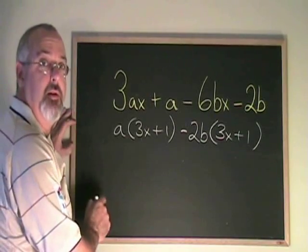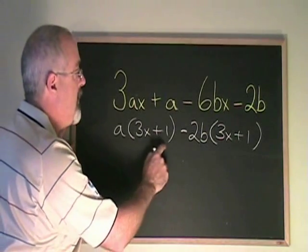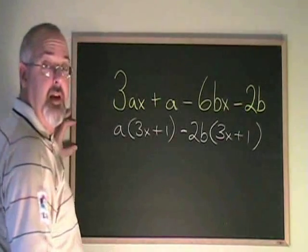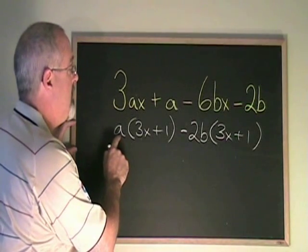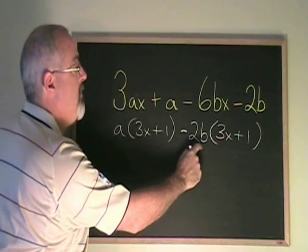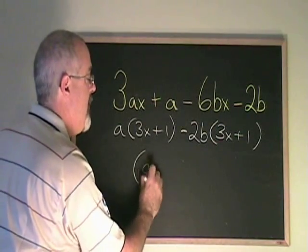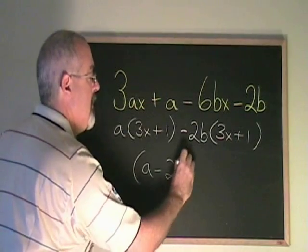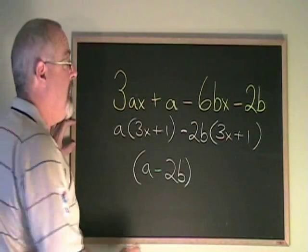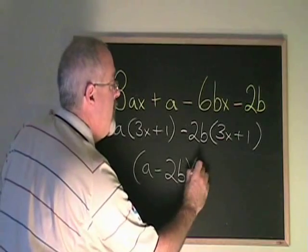It is an important step in grouping that what shows up inside the bracket has to be the same. Because that allows us to say, since both a and minus 2b are being multiplied by the same thing, we can write a minus 2b into a binomial. And that binomial will be multiplied by 3x plus 1.